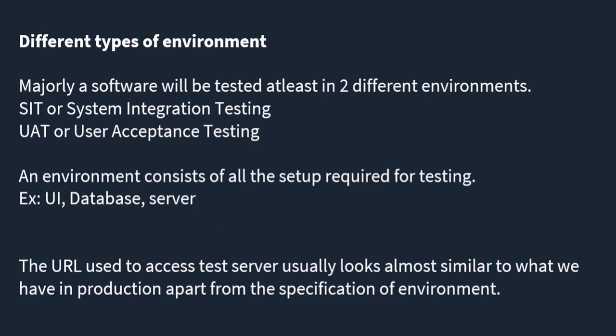Most companies follow a similar kind of URL structure. For example, if www.testinghacks.com is the production URL, to differentiate it we use the environment name — such as www.sit.testinghacks.com — which clearly indicates it is the SIT environment. Similarly, for UAT we can replace it with UAT in the URL.